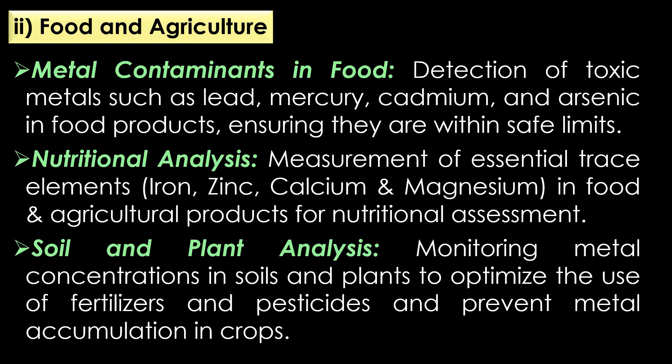The application of atomic absorption spectroscopy in food and agriculture: AAS is very supportive in detection of metal contaminants in food, nutritional analysis, and soil and plant analysis. In the detection of metal contaminants in food, atomic absorption spectroscopy detects toxic metals such as lead, mercury, cadmium, and arsenic in food products, ensuring they are within safe limits.